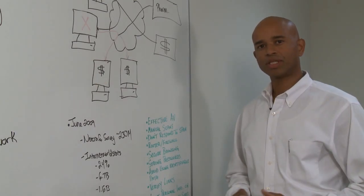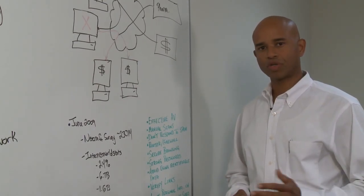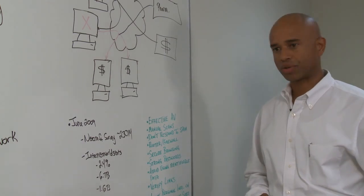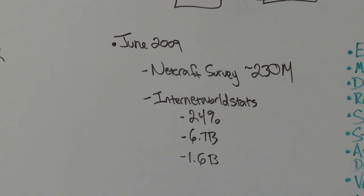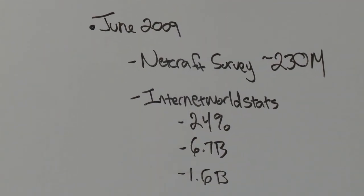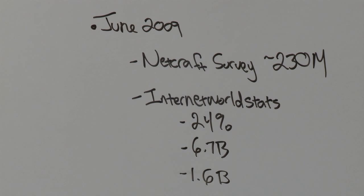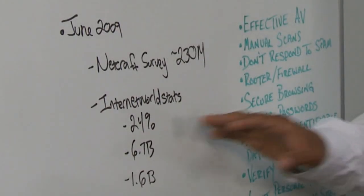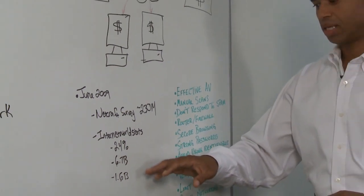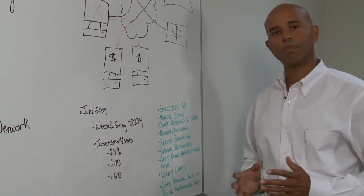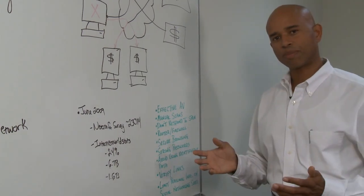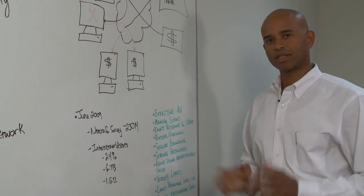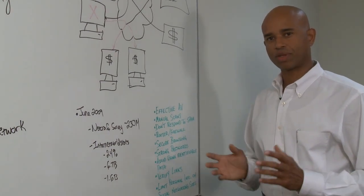So how big is the problem? Let's take a look at some global numbers to understand the scope and scale of malware and cybercrime. According to a June 2009 Netcraft survey, there are 230 million registered domains across the internet globally. According to Internet WorldStats, there is a 24% internet penetration rate with 6.7 billion people on the planet, coming out to 1.6 billion users on the internet. So what's the best way to keep ourselves safe? Let's look at some best practices to help protect yourself against this growing threat.